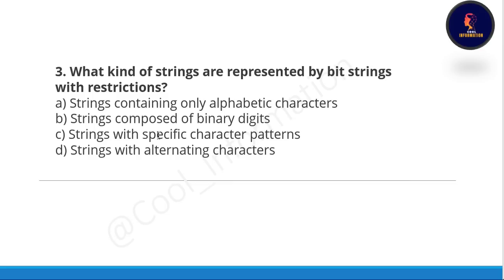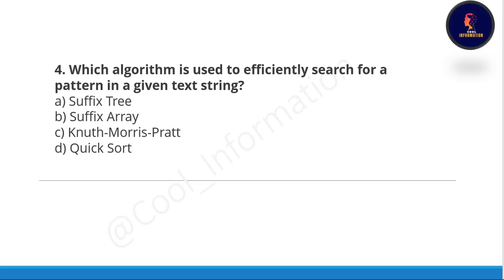Next question: what kind of strings are represented by bit strings with restrictions? Option A is strings containing only alphabetic characters, option B is strings composed of binary digits, option C is strings with a specific character pattern, option D is strings with alternating characters. Correct option is C — strings with a specific character pattern.